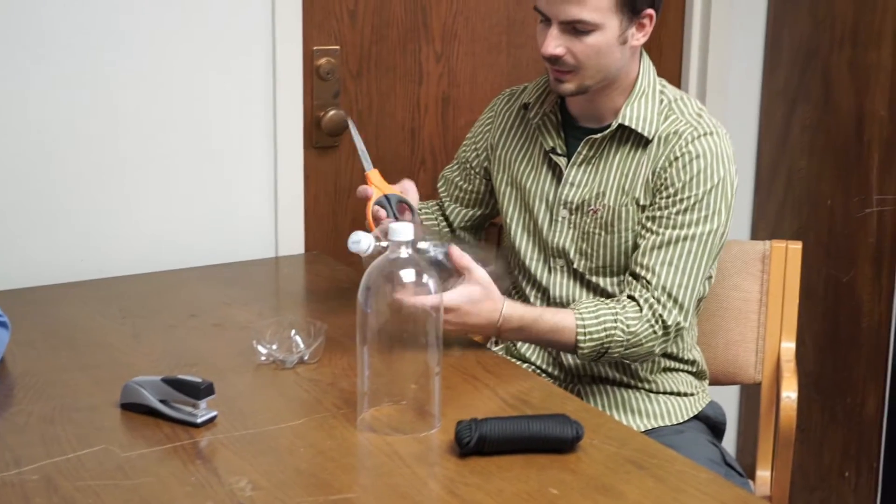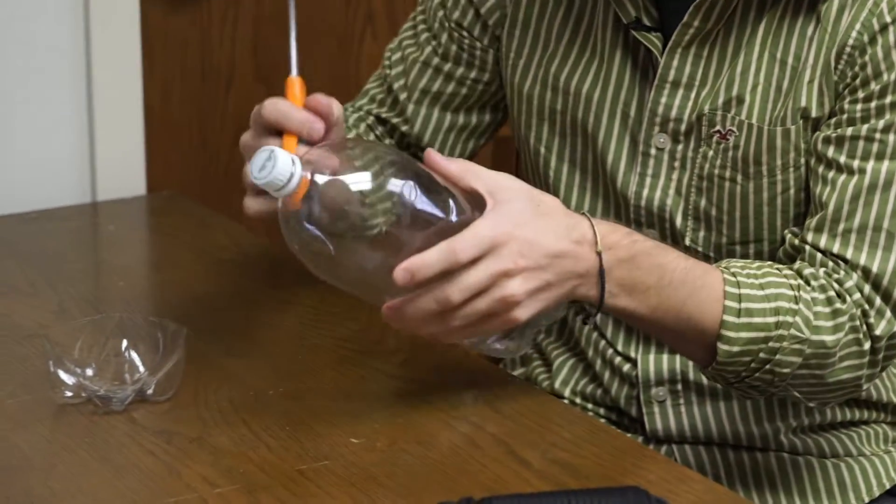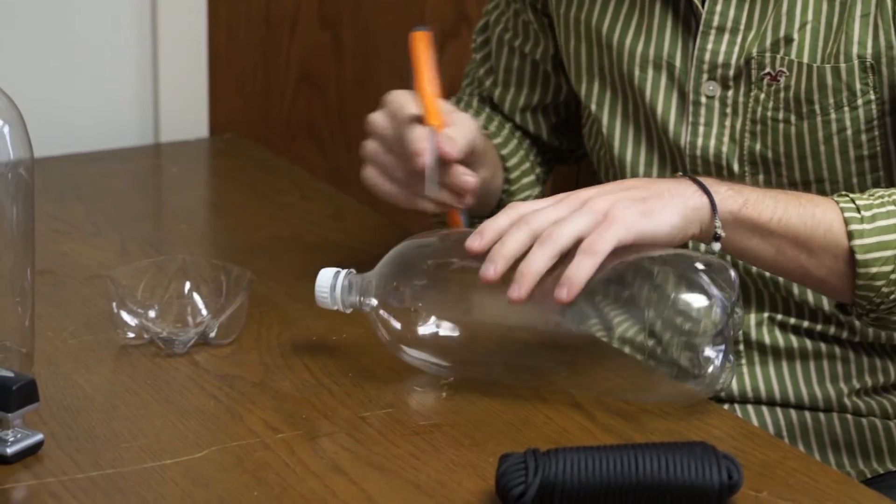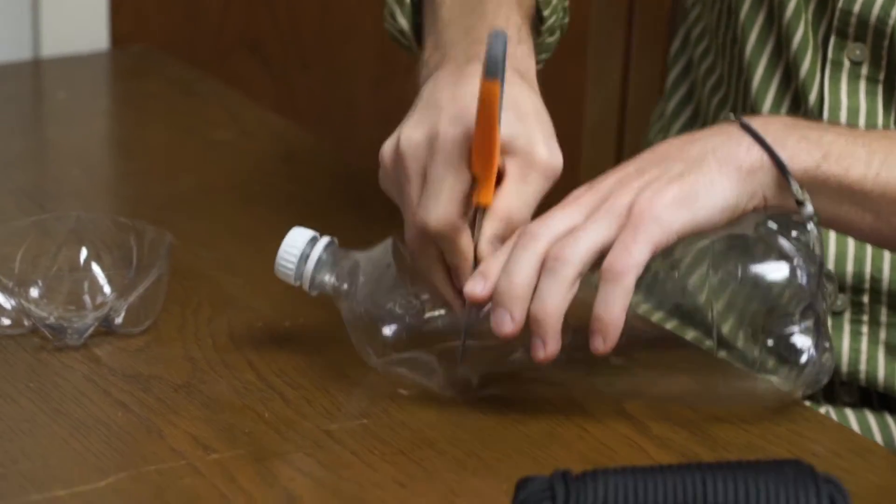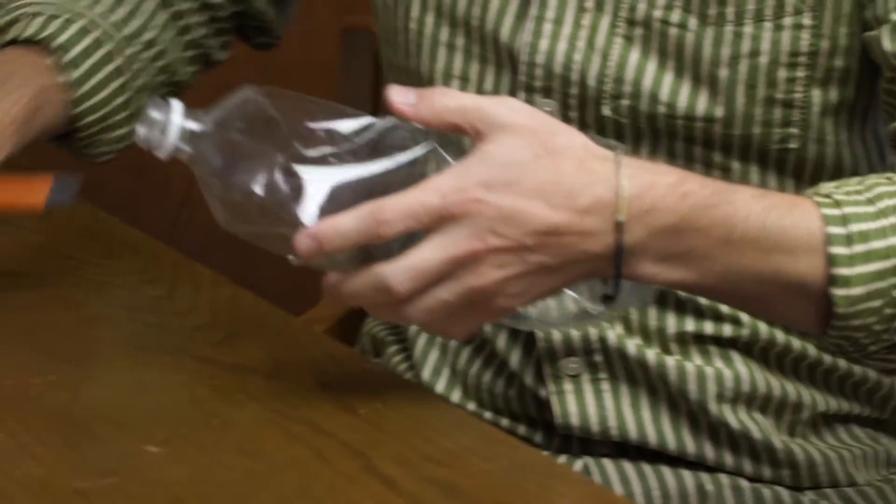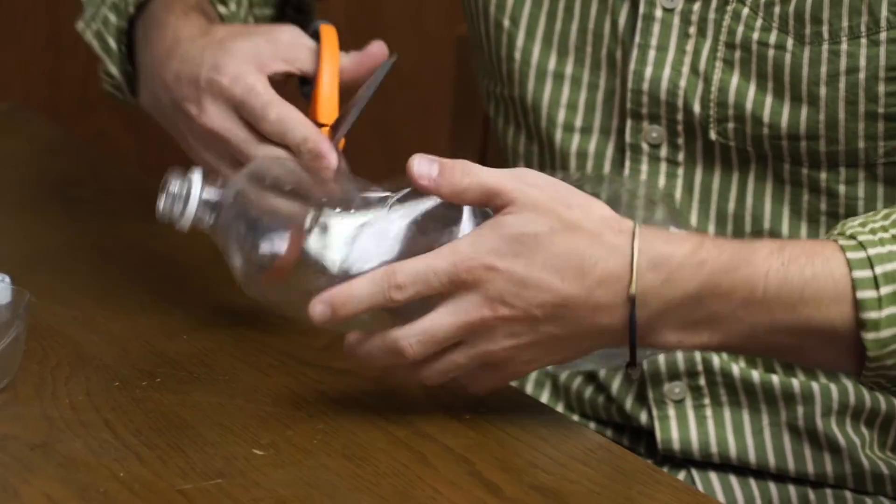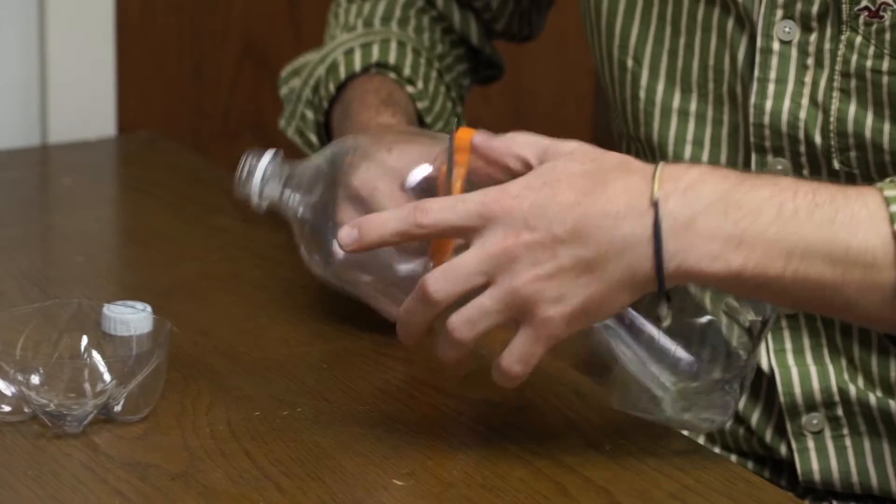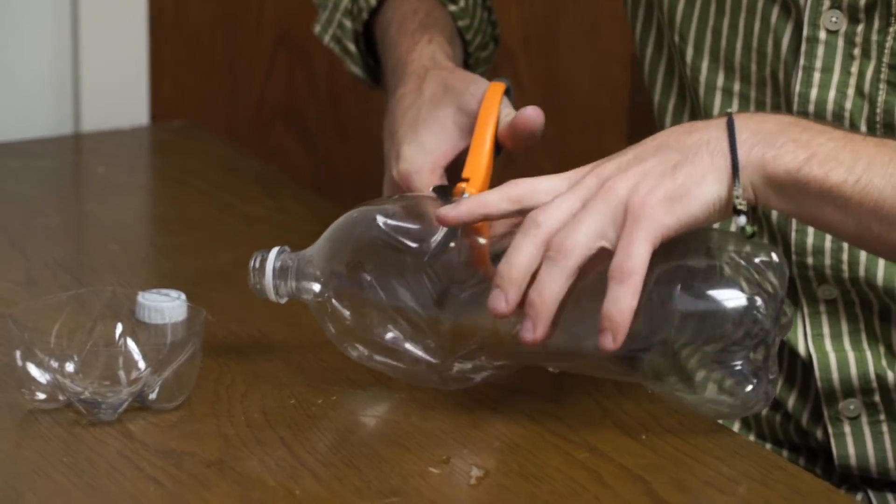So on this one again there's usually some sort of nice line right where the top of the label would have been and I'm just gonna cut right along that. If there's a spot to mess up in this process I would say that it's not giving yourself enough of the funnel. So don't cut up too close to the top, because it won't fit into the other side of your bottle. You need it to fit in the size of this cylinder.